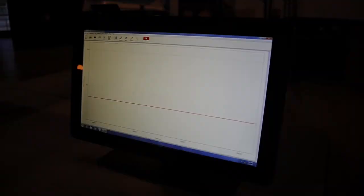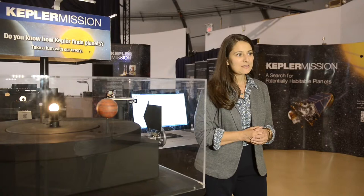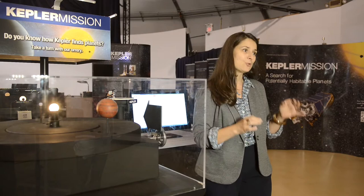This technique for finding planets is called the transit technique. Kepler has been using this for four years and in that four years Kepler has found almost 4,000 planets orbiting other stars, hundreds of which are the size of Earth. Let's go see some of Kepler's discoveries.